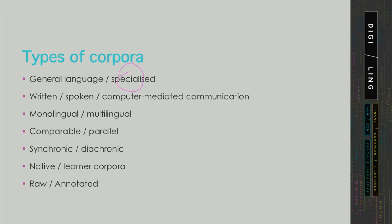Now for specialized corpora, which are our main topic here, they can belong basically to any of the categories below. So they can contain written texts, and quite often we also include internet texts, or we might even decide to include transcripts of spoken conversations. They can be monolingual or multilingual, and if multilingual, they may contain comparable portions or parallel texts or even both — quite often we build specialized corpora which are a mixture of comparable and parallel texts.